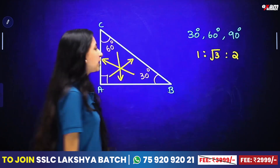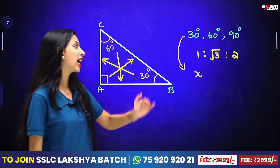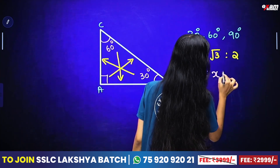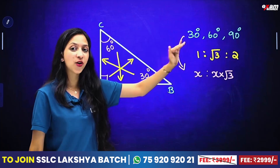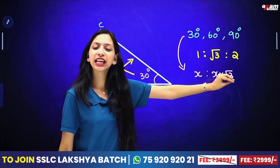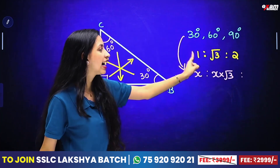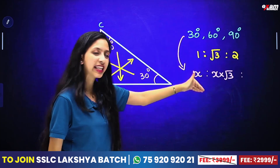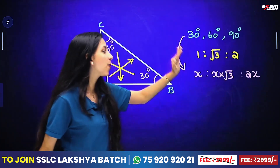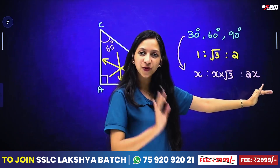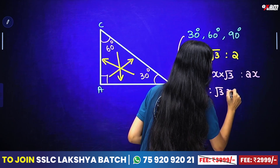The 30 degrees opposite angle — the side is x. The 60 degree opposite side: this x is root 3 multiplied. The 30 degree opposite side is root 3 multiplied. 60 is opposite, 90 is opposite — here is 2x. So x is to root 3x is to 2x.